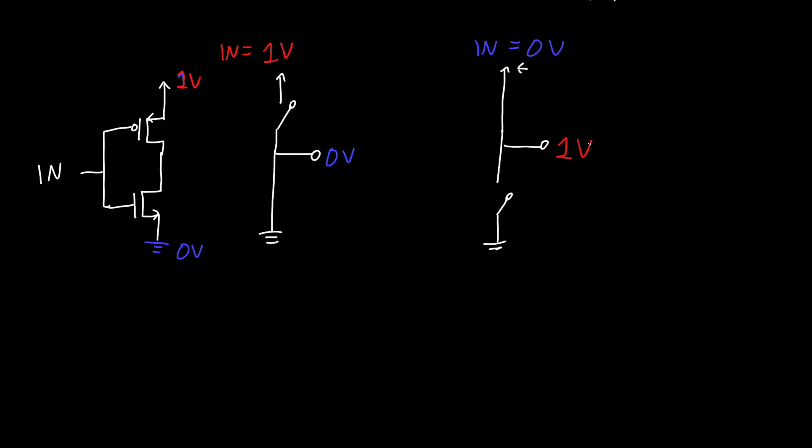And this is exactly what we wanted. So when our input is 0, our output is equal to 1. When our input is 1, our output is equal to 0 or 0 volts. When our input is 0, our output is equal to 1 volt. And so this is exactly what we wanted out of our NOT gate.